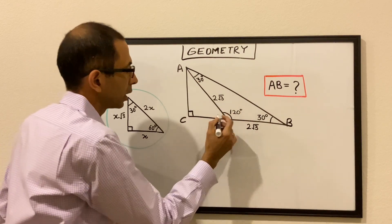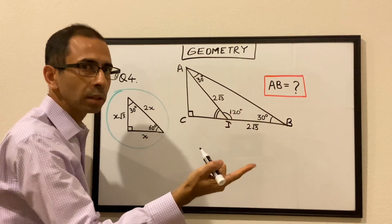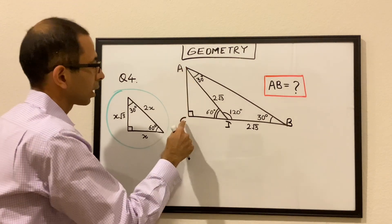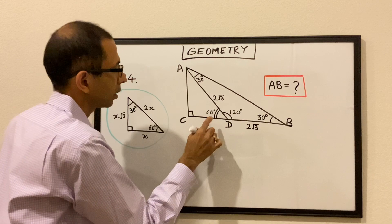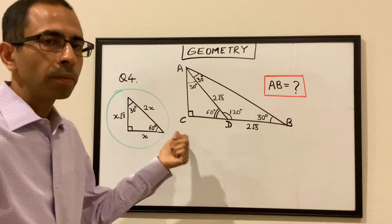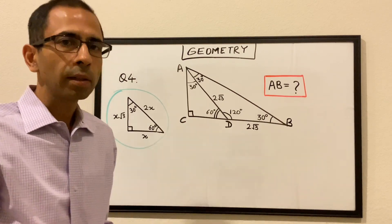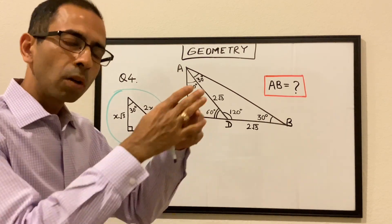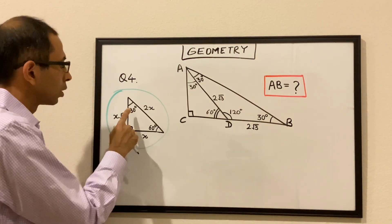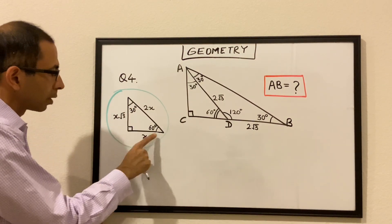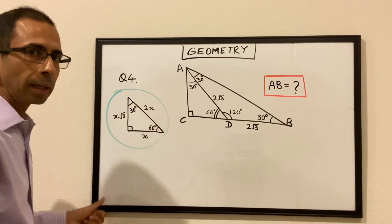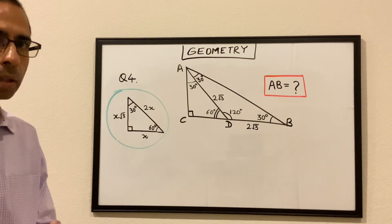If you look at triangle ADB, this is 30 and this is 30, hence the third angle would be 180 minus 30 minus 30, which is 120 degrees. So angle ADB is 120 degrees, which means angle ADC is 60 degrees. So if we look at triangle ACB: this is 60, this is 90, obviously then this would be 30 degrees. We got a special right angle triangle — 30-60-90. In a 30-60-90 triangle, if the side opposite to 30 degrees is x, the side opposite to 60 degrees is x root 3, and the hypotenuse would be 2x.